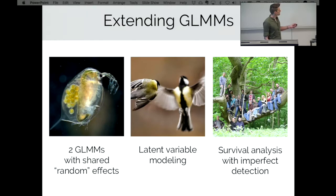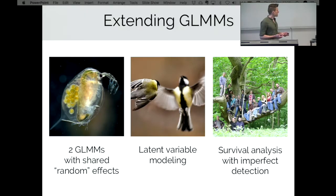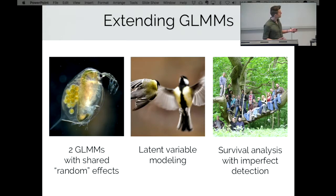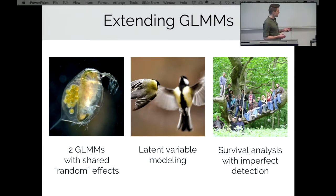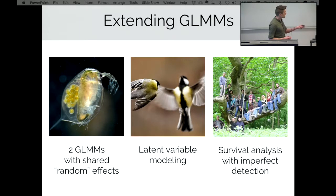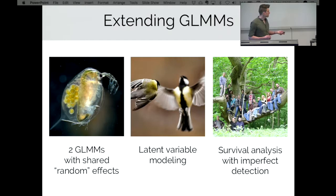The first example is on the water flea Daphnia magna, where I'm looking at something called maternal effects. I have two generalized linear mixed models which share their random effects, which is very easy to do in Stan. The second is on the bird species great tits, looking at social behavior and how much comes from genes versus environment — estimating heritability using a latent variable model. The last example is a survival analysis with imperfect detection about differences in career paths between men and women in ecology and evolution, where Bayesian statistics is very well-suited for handling imperfect detection.